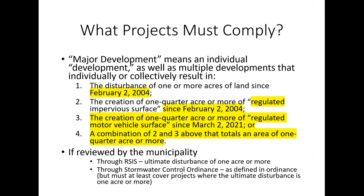The last part of the definition is a combination of the impervious surface and motor vehicle surface thresholds that together total a quarter acre or more. Importantly, you would not double count the same area — for example, an asphalt parking lot that is both regulated impervious surface and regulated motor vehicle surface counts only once. An eighth-of-an-acre parking lot on its own would only count as one-eighth of an acre.